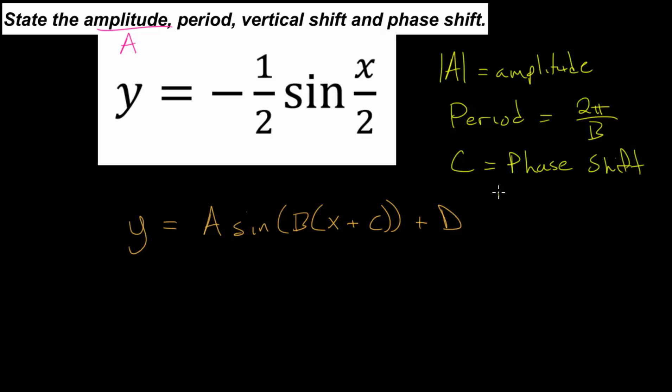And then d has to do with the vertical shift. And d works the way you would expect. If you add, let's say 3, it will shift the entire function up 3 units. If you subtract, it will shift everything down however many units you're subtracting.